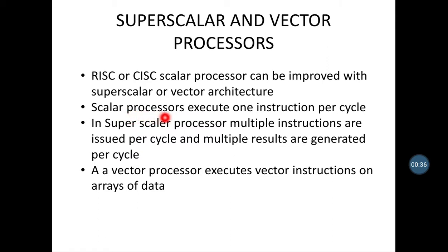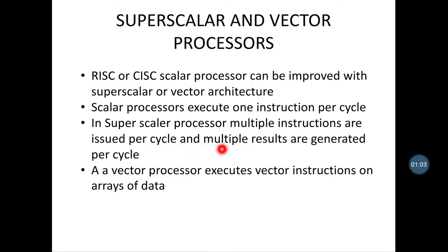A scalar processor executes one instruction per cycle. In a superscalar processor, multiple instructions are issued per cycle and multiple results are generated per cycle — that is why it is called superscalar. Compared to scalar, which executes only one instruction, superscalar executes multiple instructions and generates multiple results.